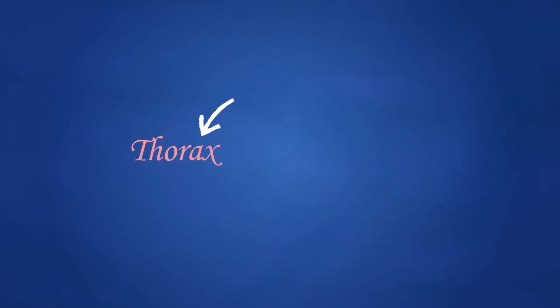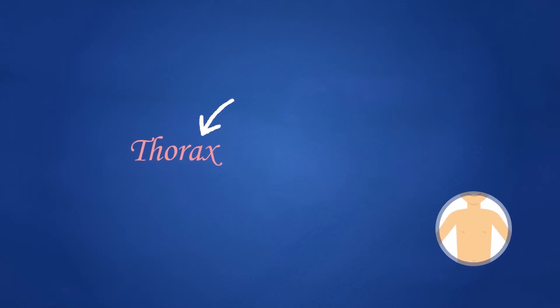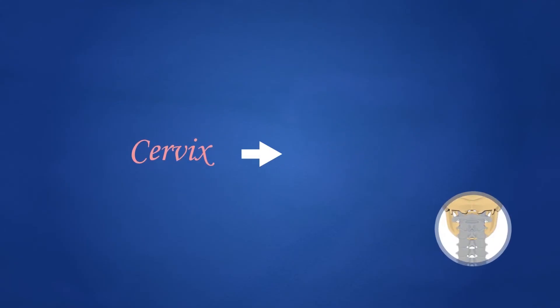And if a vowel comes before the x, such as ax or ix, you change the x to a c. Thus thorax, which means chest, becomes thoracic, to mean pertaining to the chest. And cervix, which means neck, becomes cervical, to mean pertaining to the neck.